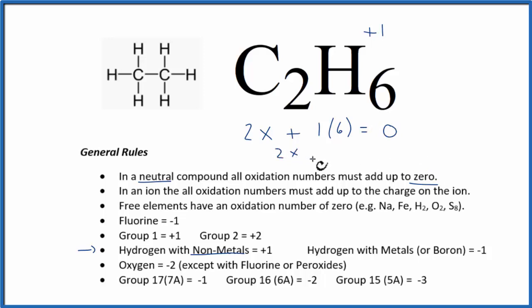So 2x, that would equal minus six, so x would need to equal minus three. So the oxidation number on each carbon is minus three.